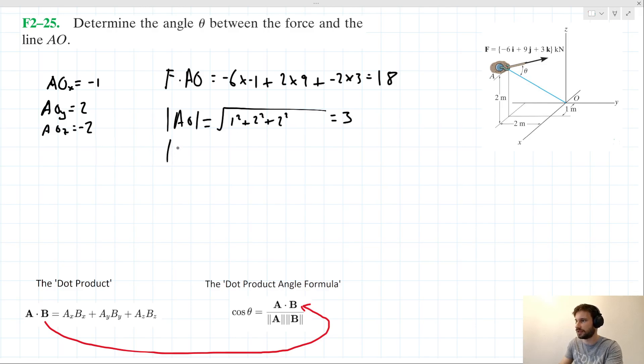And the magnitude of F, that's going to be the square root of 6 squared plus 9 squared plus 3 squared. Which when we plug into our calculator, we find is equal to 3 root 14.